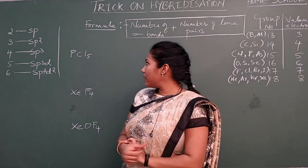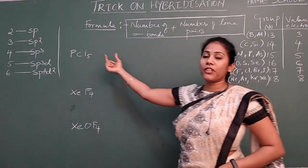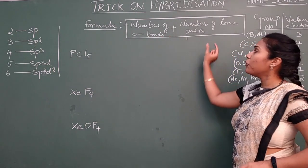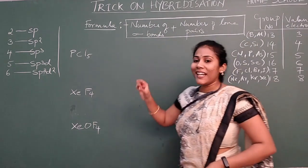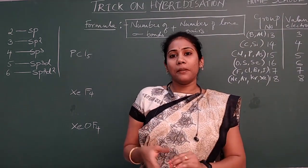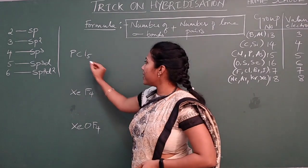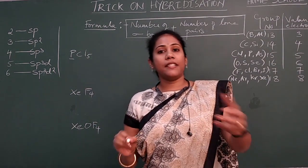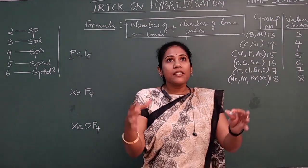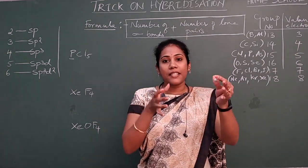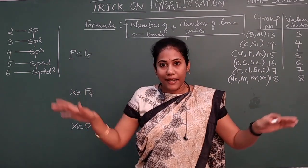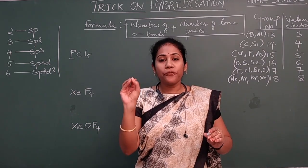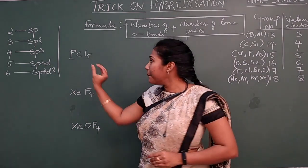The next thing is the formula — this is the trick you will apply for the compounds. The formula is: number of sigma bonds plus number of lone pairs. Hybridization of a molecule is essentially the hybridization of its central atom. For example, in PCl5, phosphorus is the central atom, so we find phosphorus's hybridization.